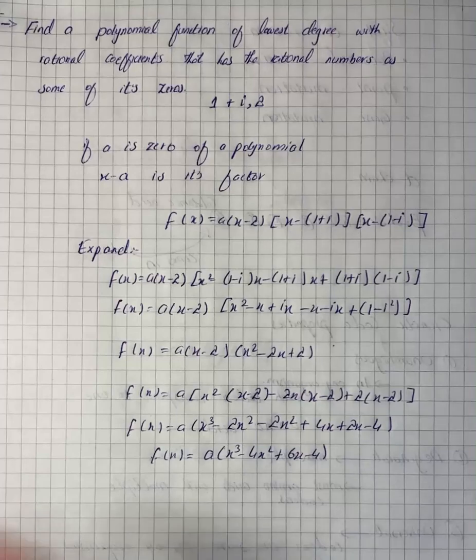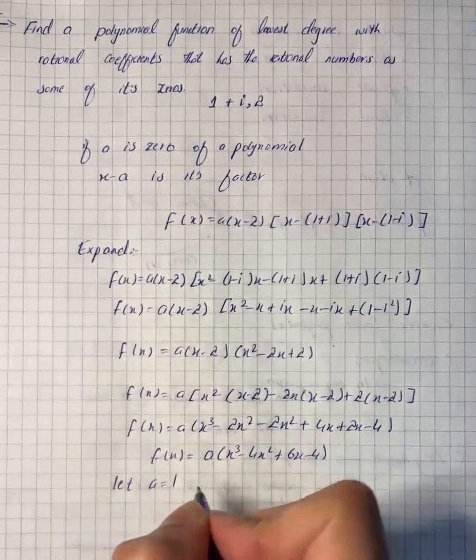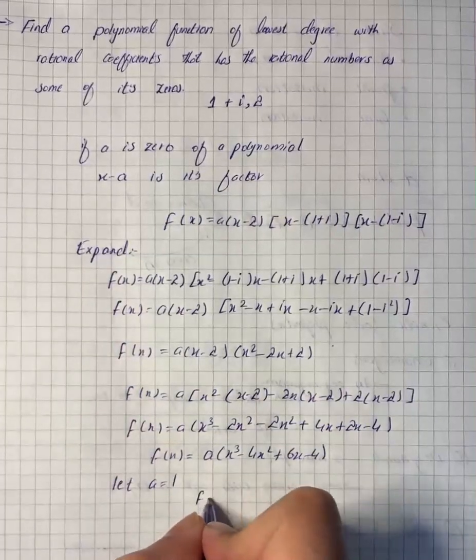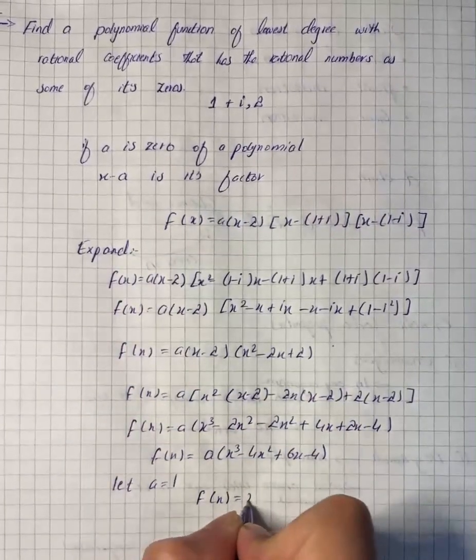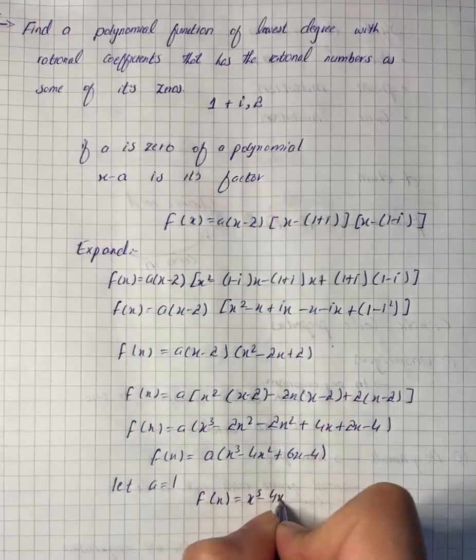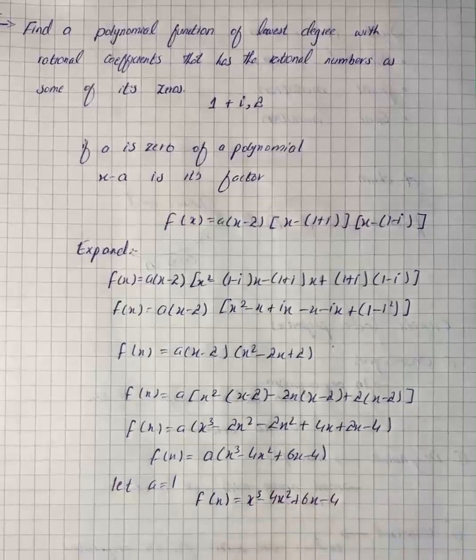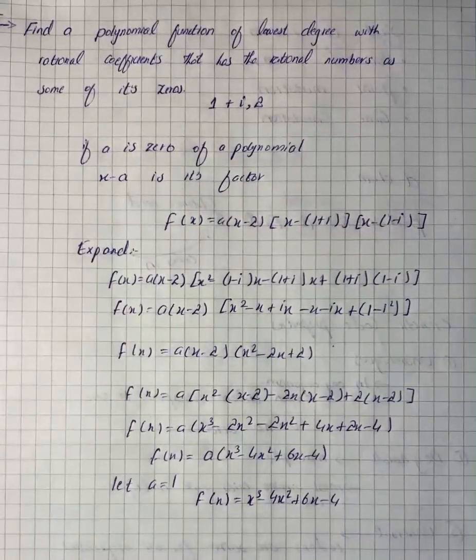For simplicity we let a equal to 1. So if a is equal to 1, we have the function f(x) equals to x cubed minus 4x squared plus 6x minus 4. So here we have our polynomial function of lowest degree.